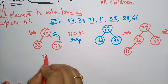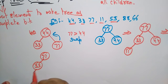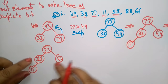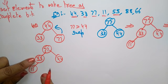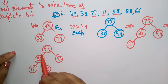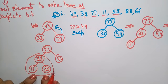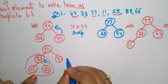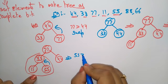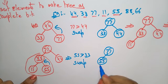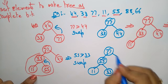Next insert 55. The current tree is 77, 33, 44, 11. To maintain the complete binary tree, insert 55 as the right child of 33. But this violates max heap because the parent 33 is less than the child 55. So just swap them — because 55 is greater than 33. Now it becomes 77, 55, 44, 11, 33.